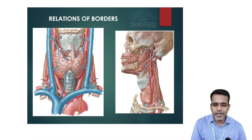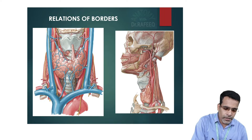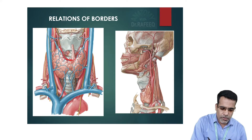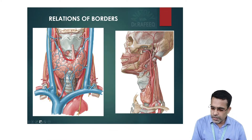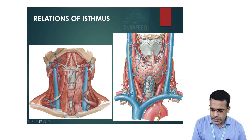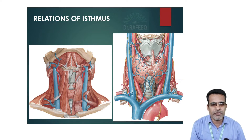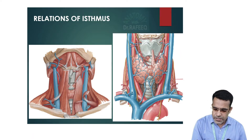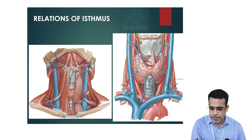Regarding border relations: the anterior border is related to the anterior branch of the superior thyroid artery, which runs along it and reaches the upper border of the isthmus to anastomose with the fellow artery of the opposite side. The posterior border relations are important — along it you have the ascending branch of the inferior thyroid artery, the posterior branch of the superior thyroid artery, and also the parathyroid glands. The upper border of the isthmus relates to the arterial anastomosis between anterior branches of the superior thyroid artery, and occasionally the pyramidal lobe arises here.